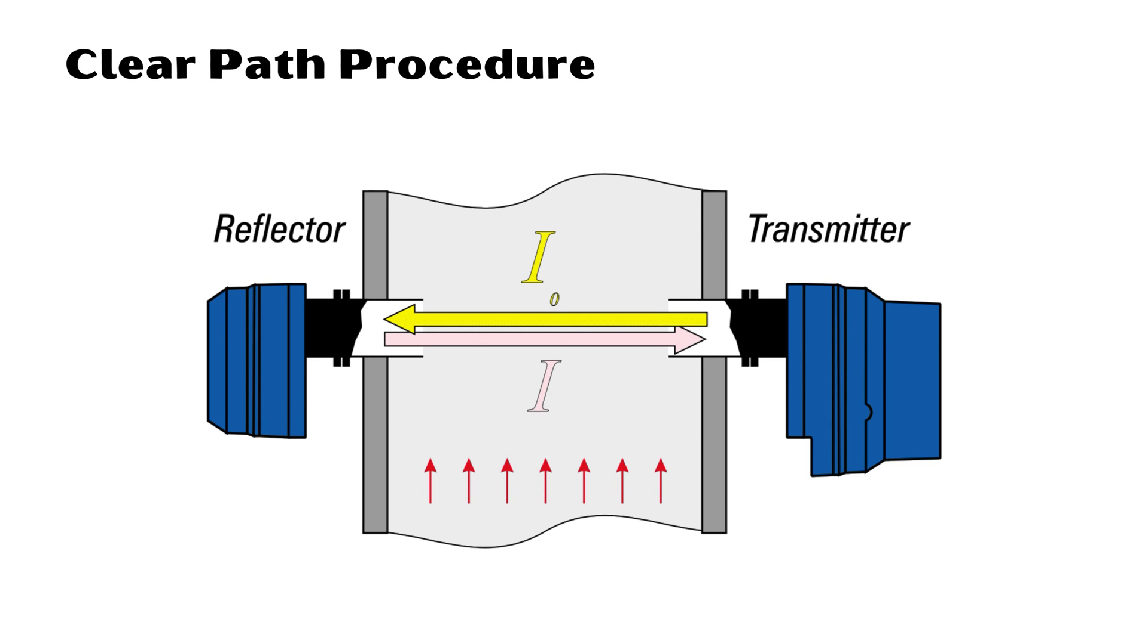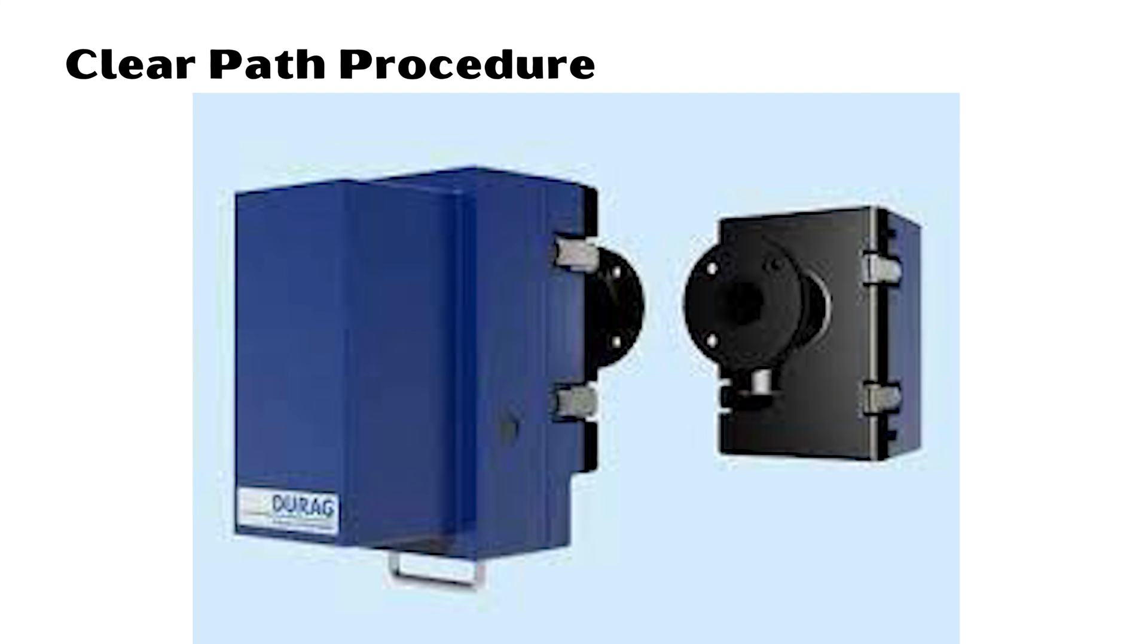Manual internal zero point window check: Normally the window check reading should not need to be electrically adjusted. If the window check reading increases, it indicates there is dust or contamination on the window or zero point reflector. Cleaning these surfaces should return the window check reading to near zero percent opacity. At some time it may be necessary to adjust the window check reading back to zero.